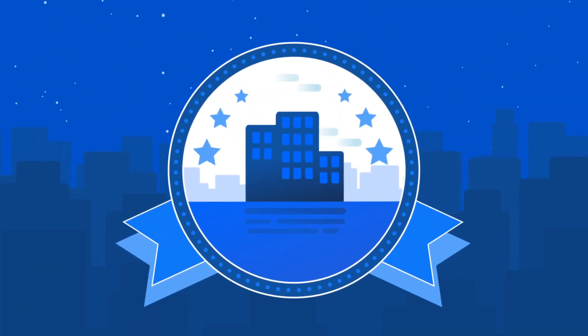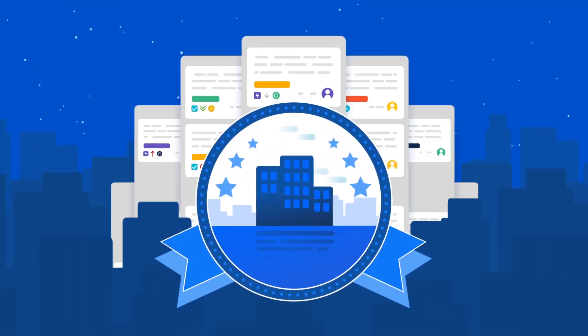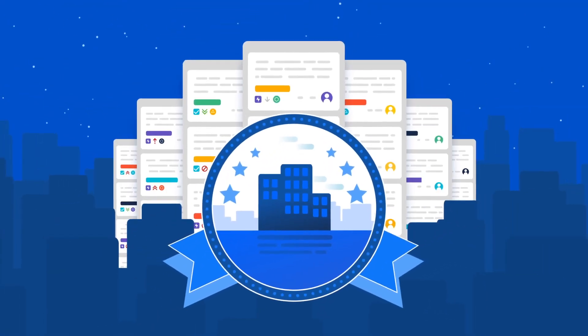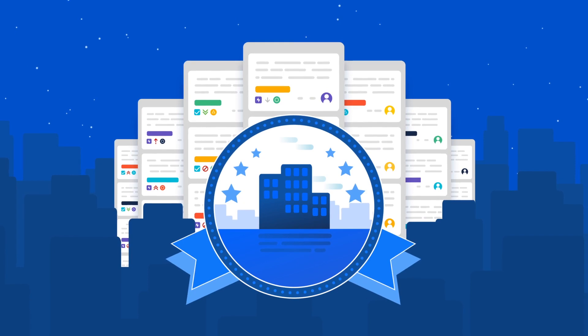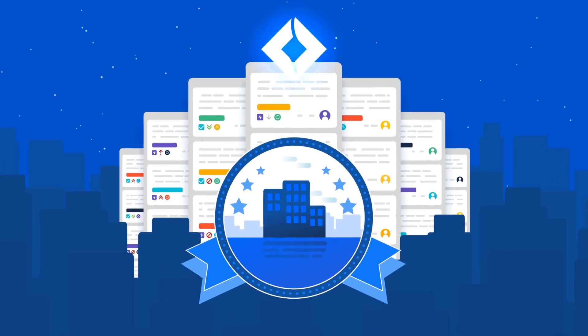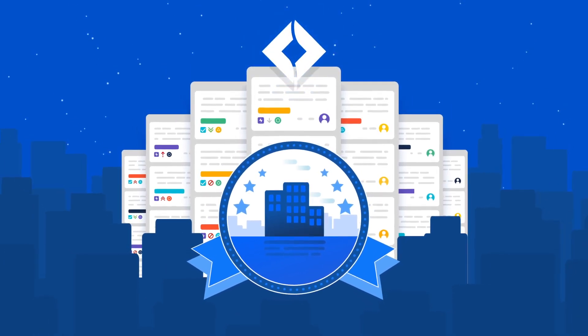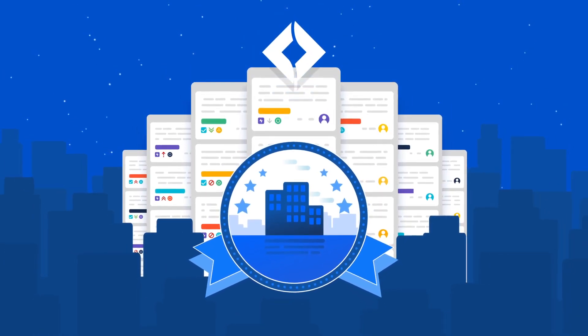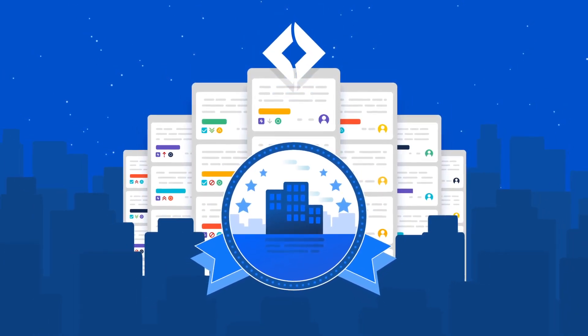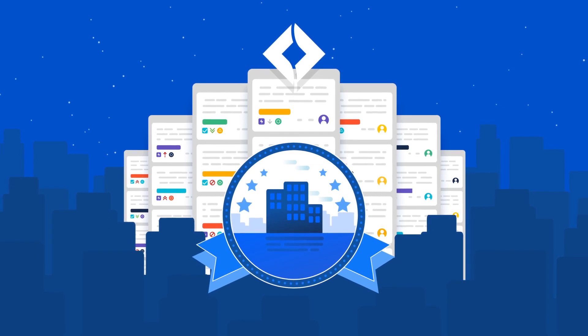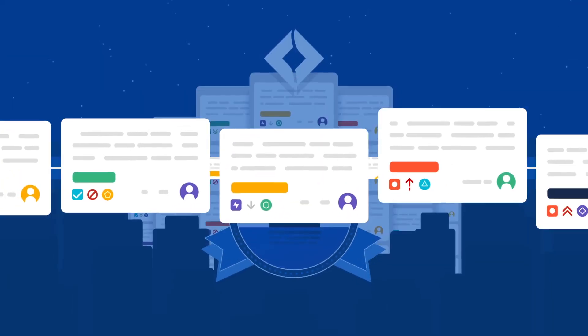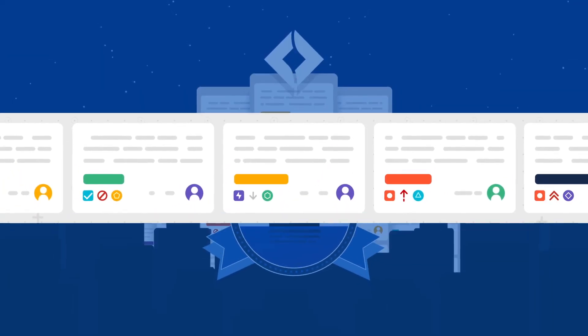Your company has embraced agile project management practices and of course you're using JIRA, the number one software development tool used by agile teams. Strangely though, management would still like to see projects laid out on a timeline with progress reporting.